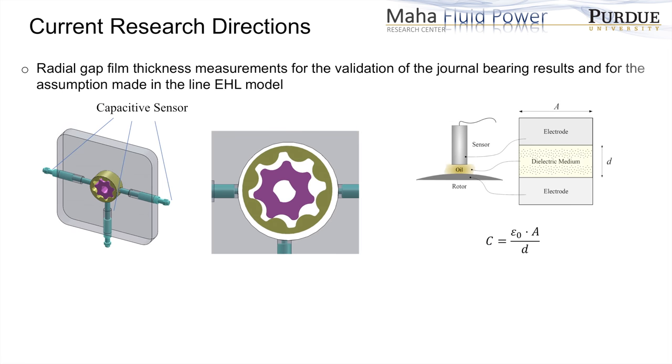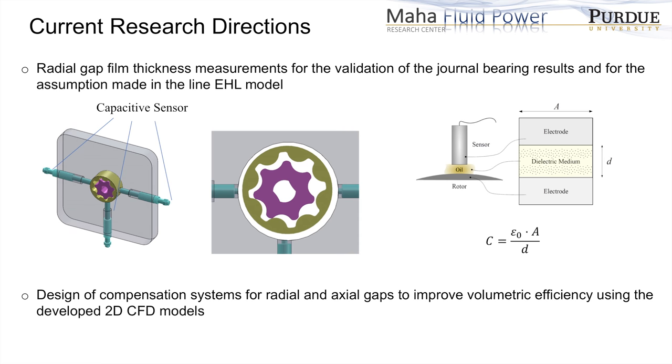The next steps of this research include the measurement of the film thickness between the outer gear and the casing in order to extend the model validation, and the design of an innovative solution for axial and radial gap compensation.